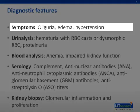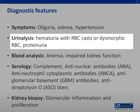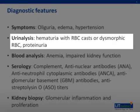Clinical symptoms of glomerular injury may include oliguria, edema, hypertension, and renal failure. Due to the altered filtration barrier, proteins, red blood cell casts, and dysmorphic red blood cells may be present in the urine.